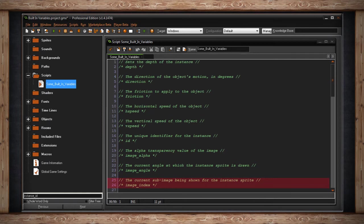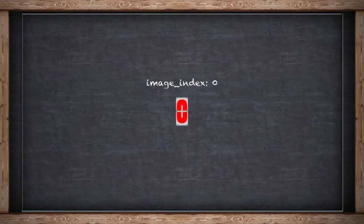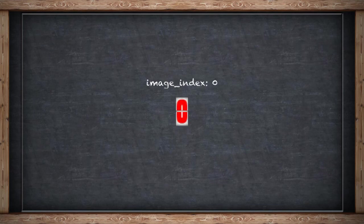Image index is the current sub-image being shown for the instance sprite. You can read from or write to this variable. Reading image index shows you the current sub-image your animation is on. Or you can write to it and set which image index you want your sprite to be showing. This is useful when you're not animating your sprite but want to select a specific sub-image from your animation strip. The first sub-image is 0, and it increases from there. When GameMaker reaches the end of your sub-images, it loops back to 0.